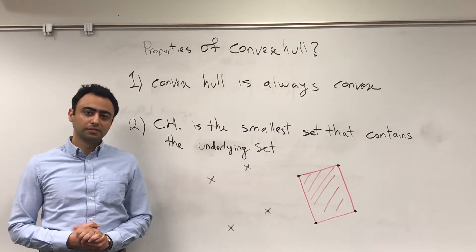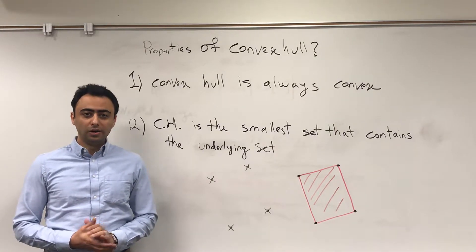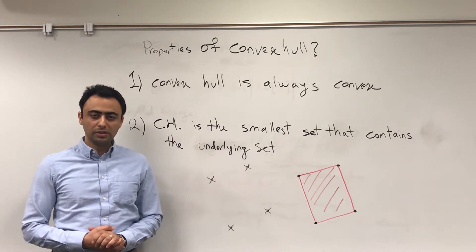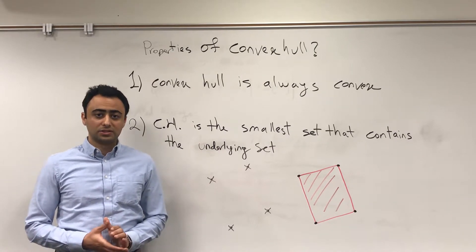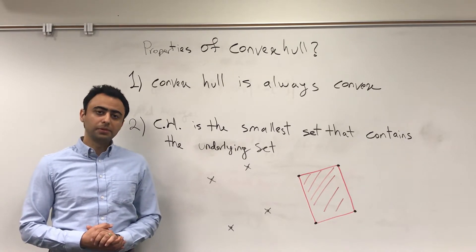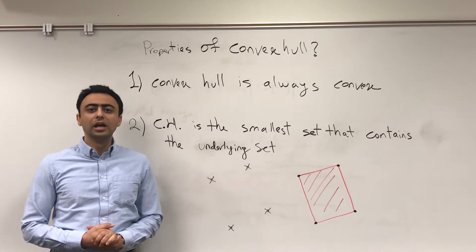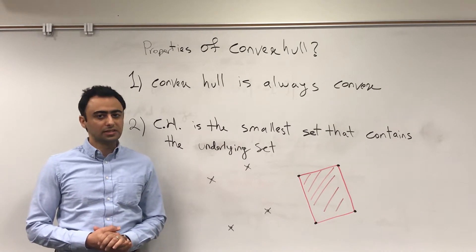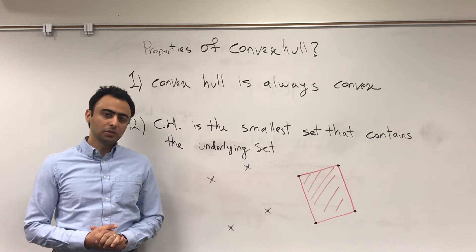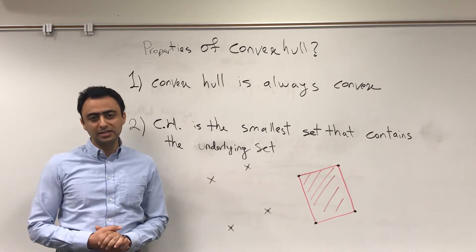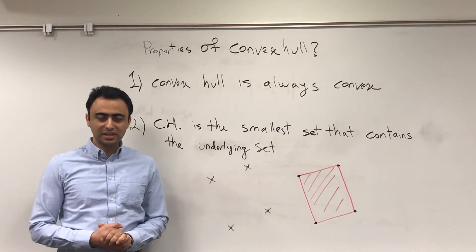The properties of convex hull are very useful because we can use them to build convex sets for convex optimization problems. The first property is that the convex hull of any set is convex. The second property is that the convex hull of a set is the smallest convex set that contains the underlying set.